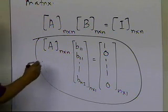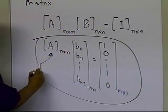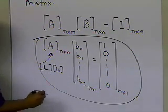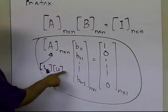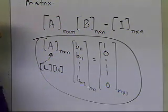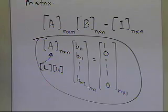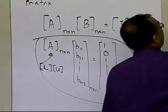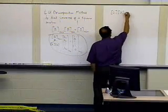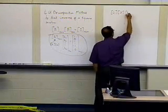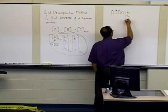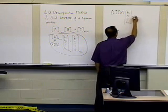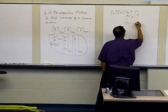What I'll be doing is changing A into L times U. So L times U, multiplied by the first column of the B matrix — b11, b21, all the way up to bn1 — will equal the first column of the identity matrix: 1, 0, 0, all the way up to 0.